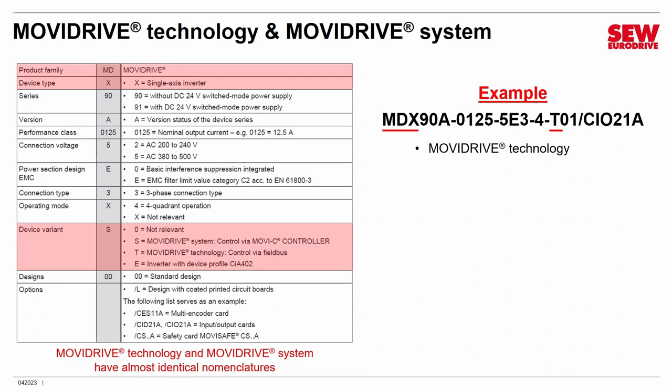Starting at the beginning: MDX — MD means MoviDrive, and X means a single-axis inverter. So this is either a MoviDrive Technology or a MoviDrive System, since a Modular is not a single-axis inverter. To know whether it's a System or a Technology, you jump to the device variant section. If it's a System, it'll have an S; if it's a Technology, a T. In this case we have a T — so it's a MoviDrive Technology, and we know our basic product.